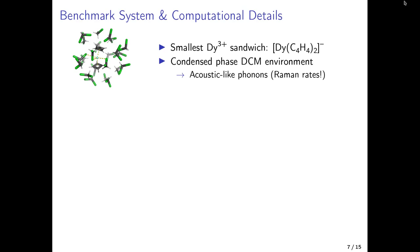The benchmark system is a dysprosium sandwich complex from the family of high-performance SMMs, surrounded by a small shell of dichloromethane molecules. This was important because the Raman process requires a description of acoustic phonons — rigid body translations and rotations of molecules in weak intermolecular potentials — and by definition, including those vibrations requires an explicit description of the environment.